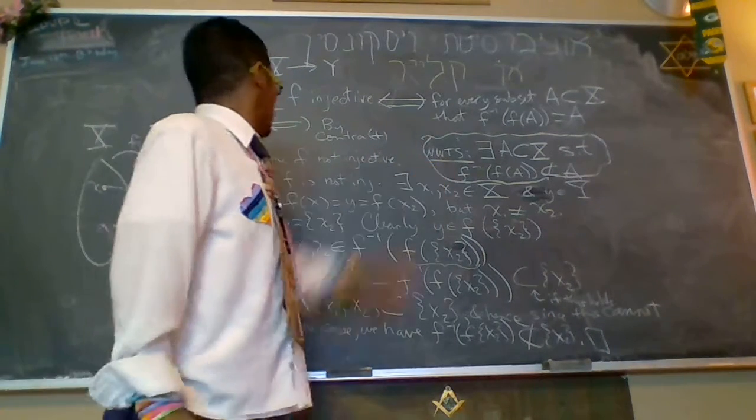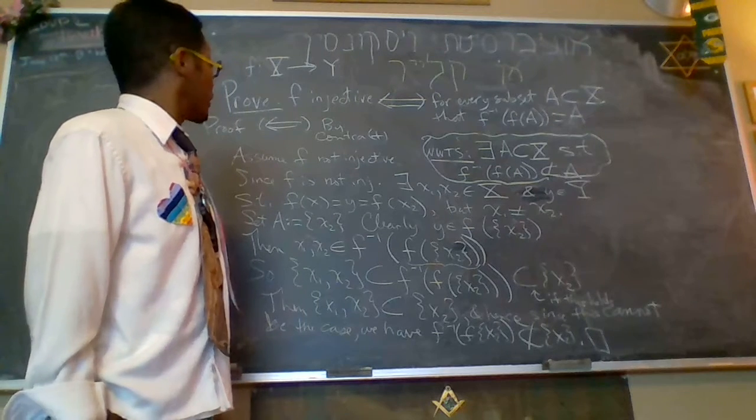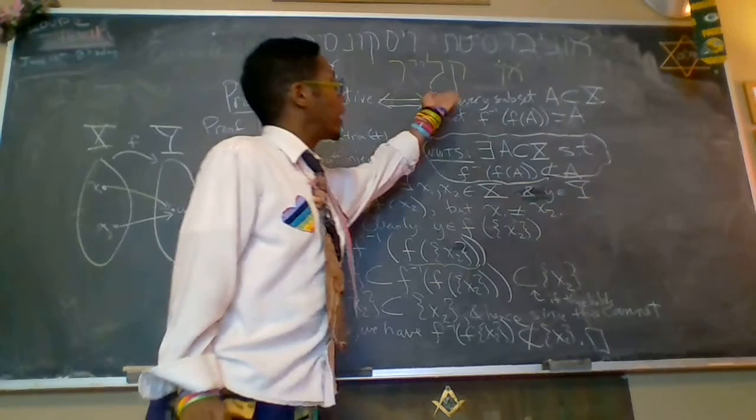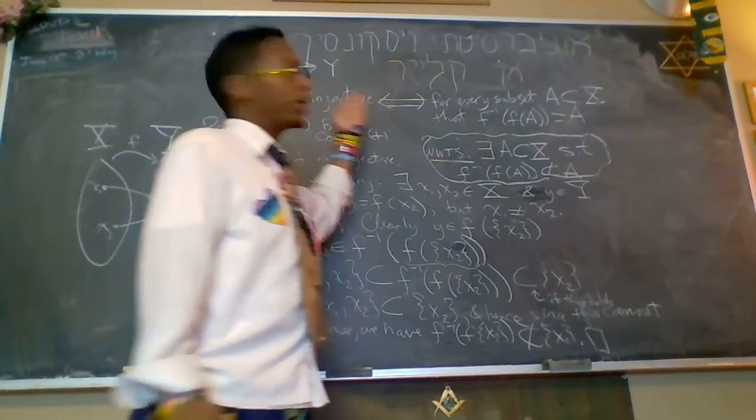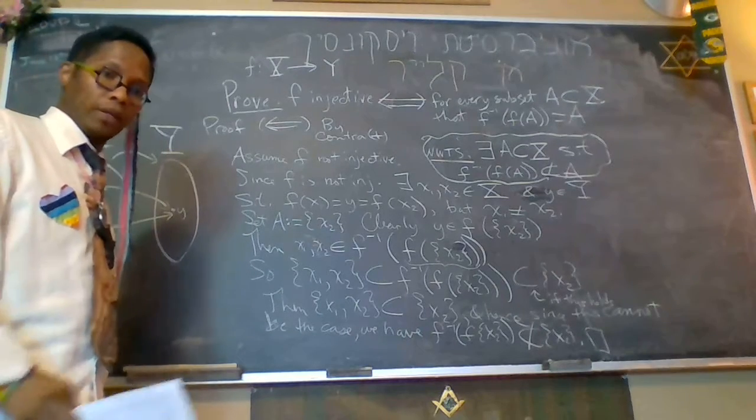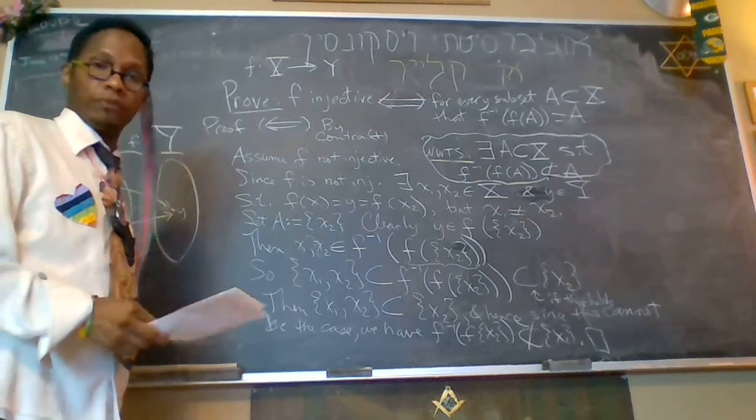So we've proven what we want to show, so by the contrapositive, if it is the case that every subset a contained in x, that this equality holds, then f is injective. So that's one version of the proof, and now I'm going to pause and do a different version of the proof.